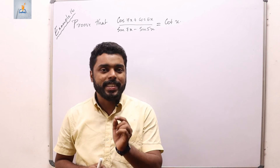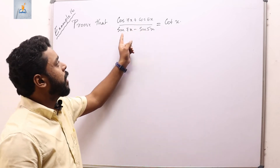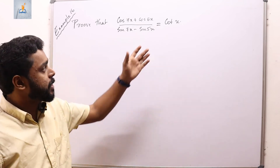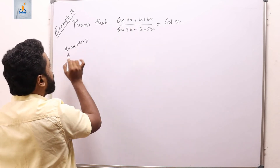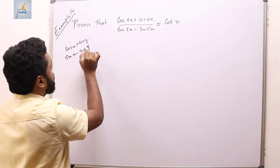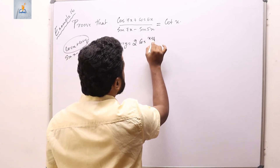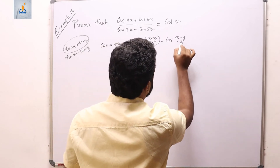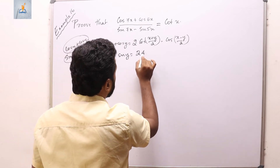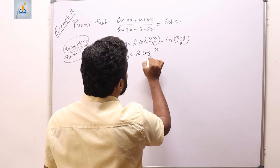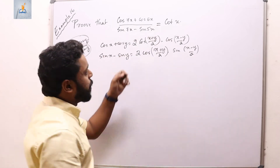Example 16: prove that (cos 7x + cos 5x)/(sin 7x − sin 5x) = cot(x). The numerator is of the form cos A + cos B and the denominator is of the form sin A − sin B. The formula for cos A + cos B = 2·cos((A+B)/2)·cos((A−B)/2), and sin A − sin B = 2·cos((A+B)/2)·sin((A−B)/2).